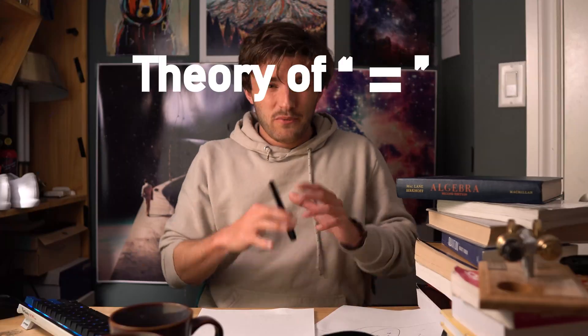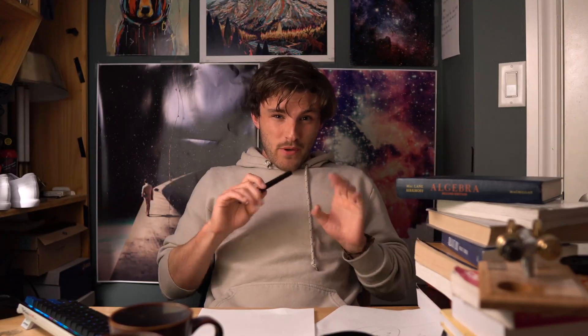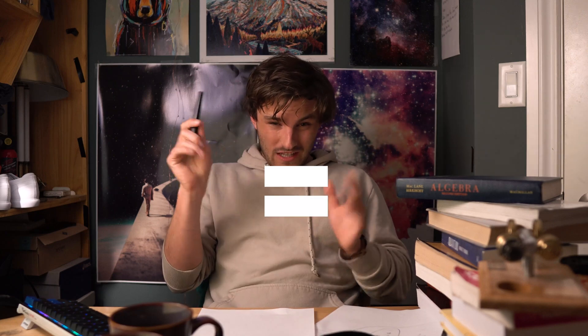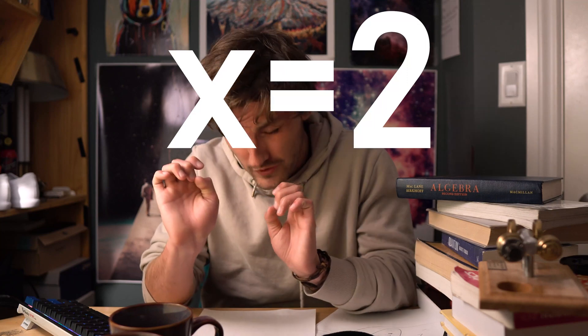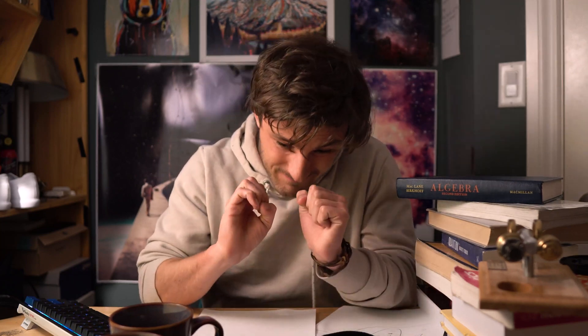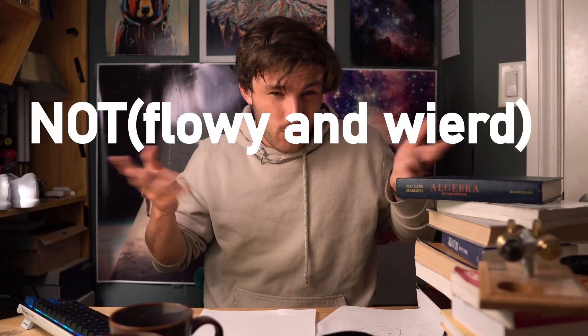I went over all the instances I'd seen the equal sign and came up with a theory of it. So when you first see the equal sign back in grade school, it's x equals two, or blah equals blah — a single value. Then in basic algebra you get simple equations like x plus two equals four, so x equals two. There isn't a bunch of flowy stuff going on — this is that, no big deal.